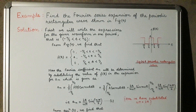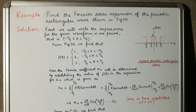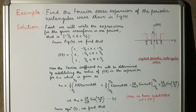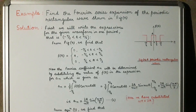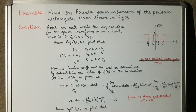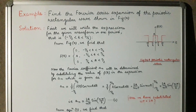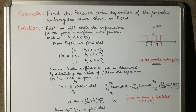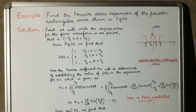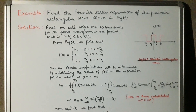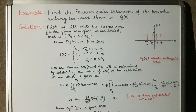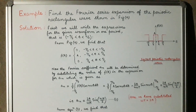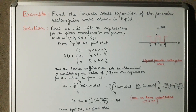We can solve this given example in either of two ways. First, we will find out the expression for the function f(t) of the given periodic wave for a period T. After finding out the expression for f(t), the next step would be to find out the values of the Fourier coefficients a₀/2, aₙ, and bₙ.